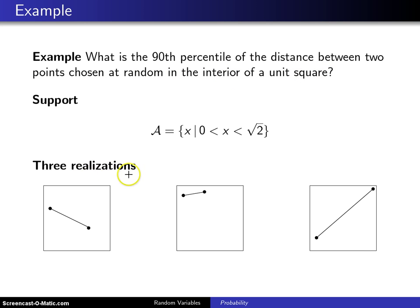Down below here there are three realizations. Here might be the point that you pick in a unit square. Each side of the square has length one, that's the unit part. This point might be a random point that you choose, this might be a point that your friend chooses, and here is a random distance right there.